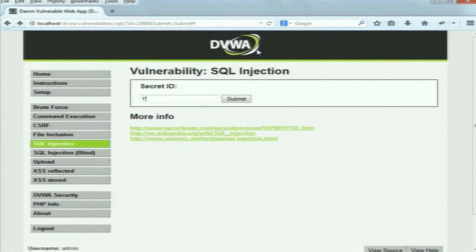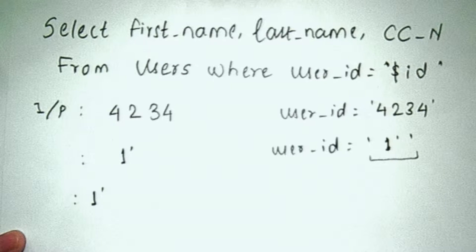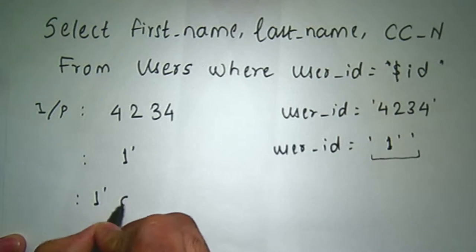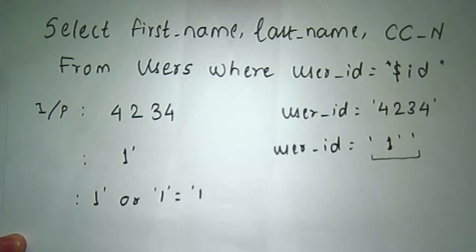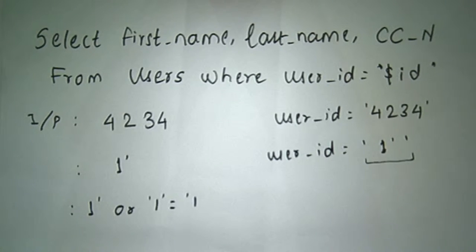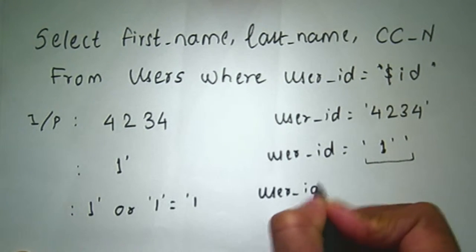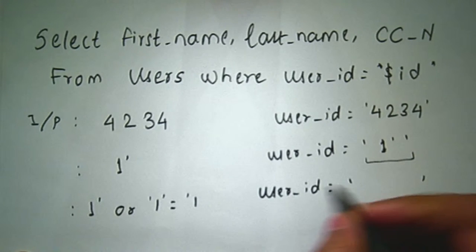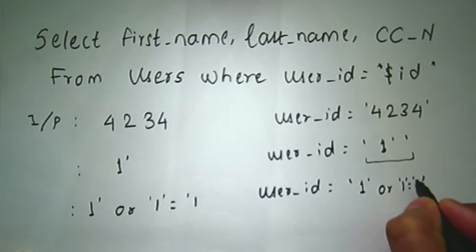Now, what will happen if the input is: 1' or '1'='1 ? The input is: 1, quote, then 'or', then quote, 1, quote, equal to, quote, 1. When this is given as input, the user_id condition becomes: quote, 1, quote, or, quote, 1, quote, equal to, quote, 1. The first part may or may not be true, but the second part – '1'='1' – is always going to be true.